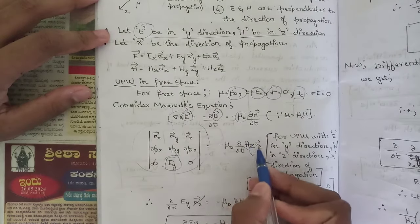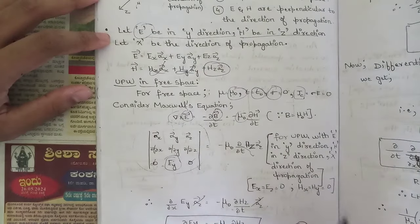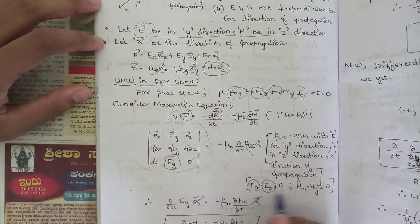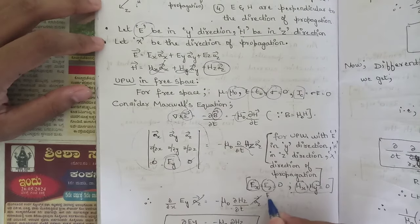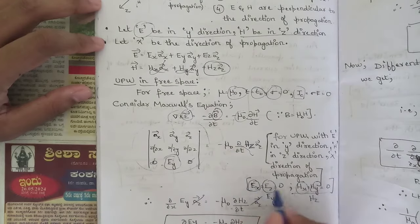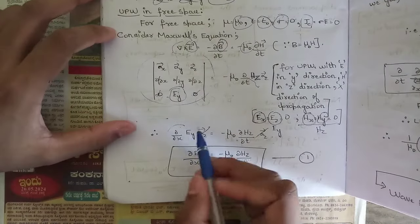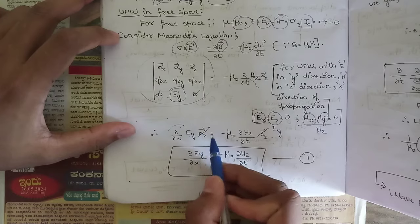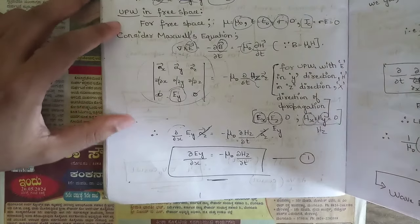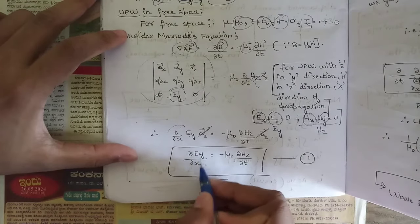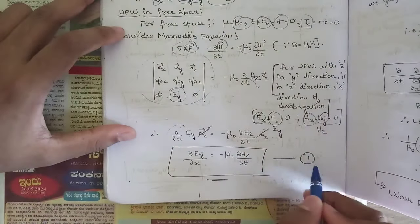This equals minus mu naught dou Hz by dou t, because H is taken in the z direction. The other components are zero. Since x is the direction of propagation, Ex equals Ez equals Hx equals Hy equals zero. After taking the determinant, the expression obtained is: dou Ey by dou x into az equals minus mu naught dou Hz by dou t into az. Cancelling az from both sides gives dou Ey by dou x equals minus mu naught dou Hz by dou t.